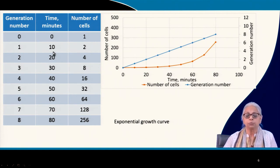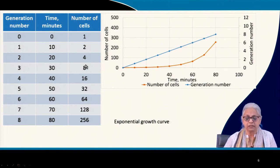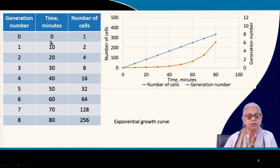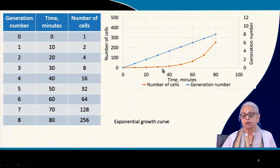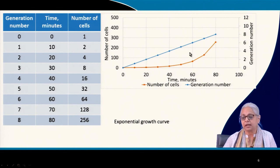Assuming a doubling time of 10 minutes for this hypothetical case, you have time increments, number of generations, and number of cells. The number of cells grows exponentially — shown by the orange curve — while the blue line shows the generation number.